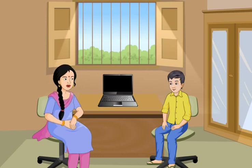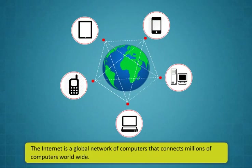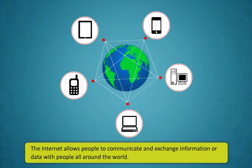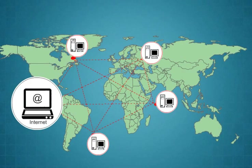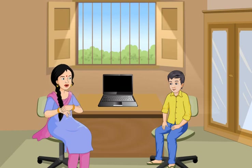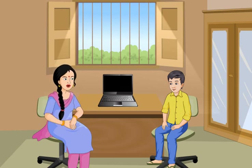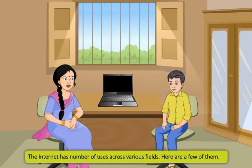First, let me explain what the internet is. The internet is a global network of computers that connects millions of computers worldwide. The internet allows people to communicate and exchange information or data with people all around the world. Through internet, you can send any information or messages to any part of the world within seconds. Let us learn about some of the applications of internet. The internet has a number of users across various fields.